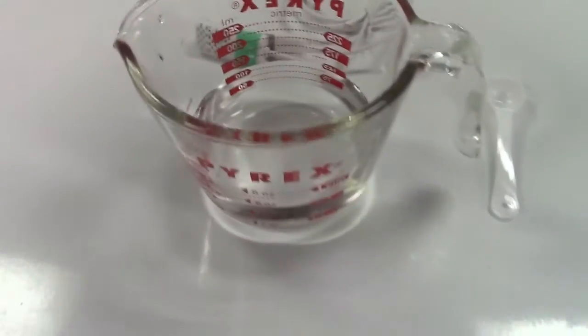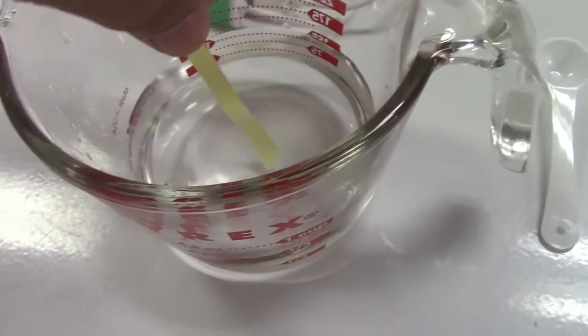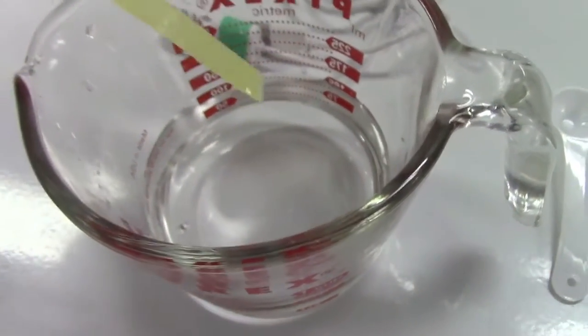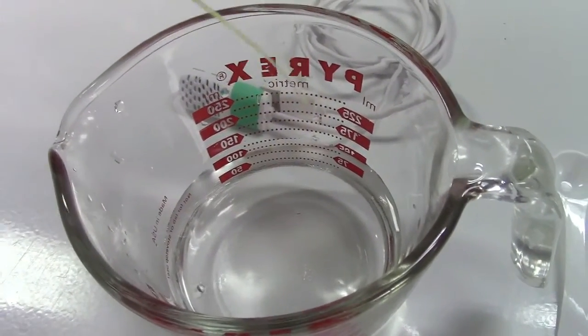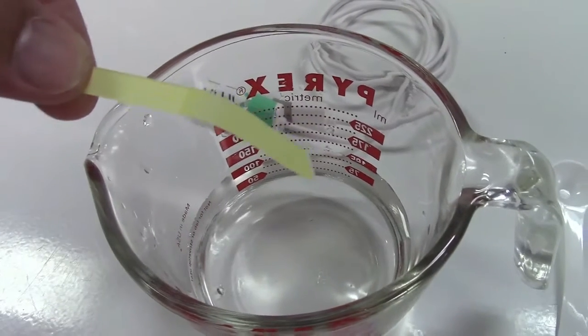So here is approximately a half cup of water, or four ounces. The test strip they give you should change color if there's bleach, and there is not because it hasn't changed. Now we're going to add salt.